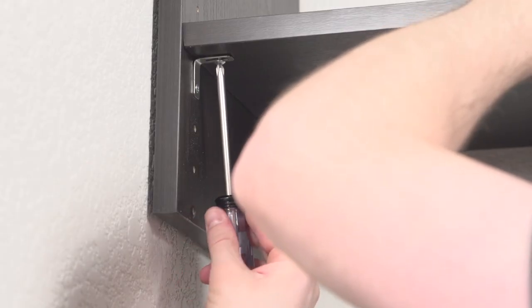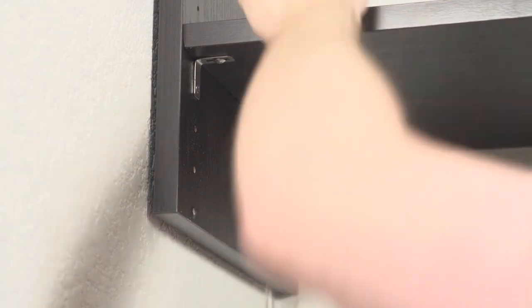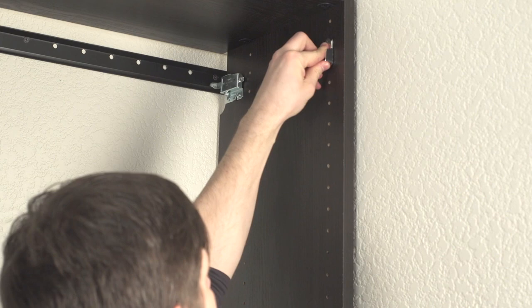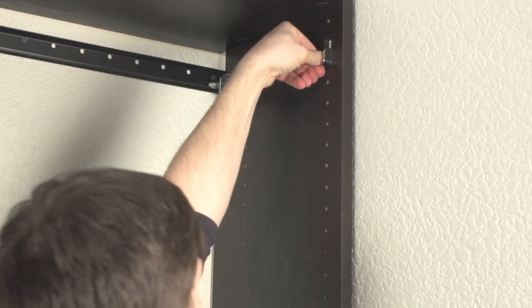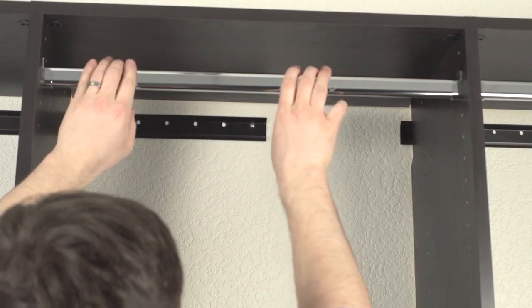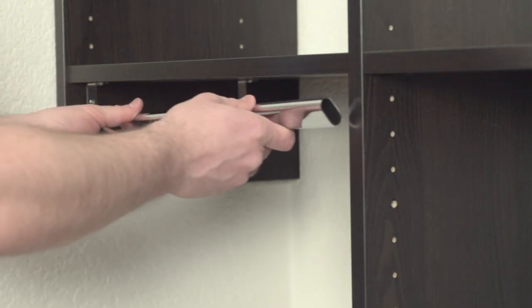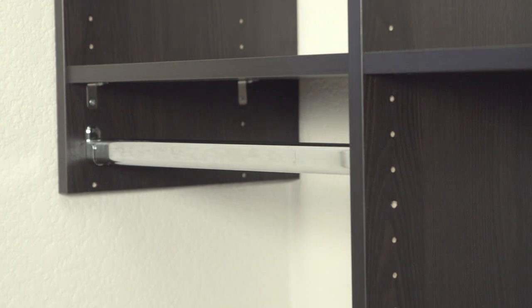For custom length shelves, you will need to install L brackets to attach the shelf to the upright. Install the wardrobe rod supports by pushing into the pre-drilled holes in the uprights. Insert the wardrobe rod into the wardrobe rod supports. The wardrobe rod supports are designed to be adjustable and can be moved to any desired height.